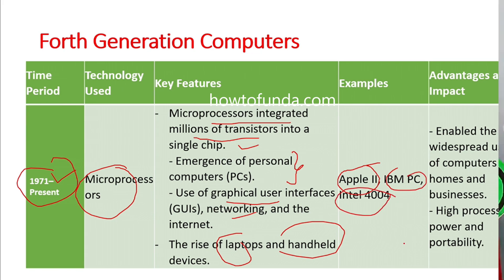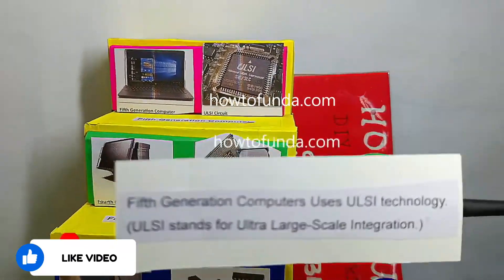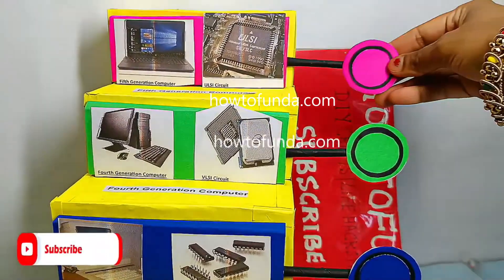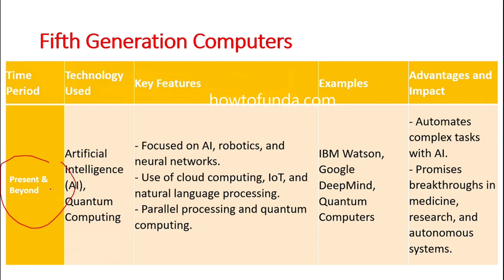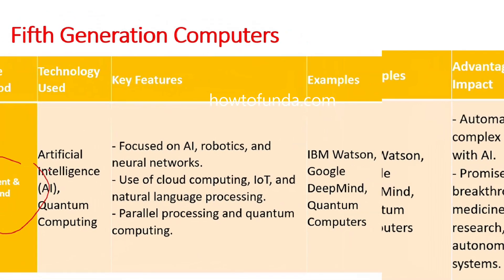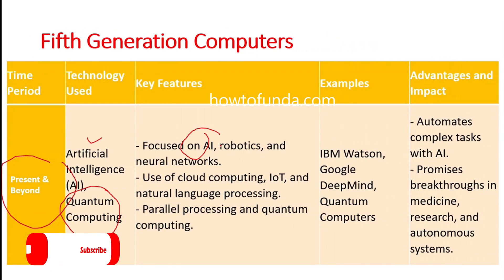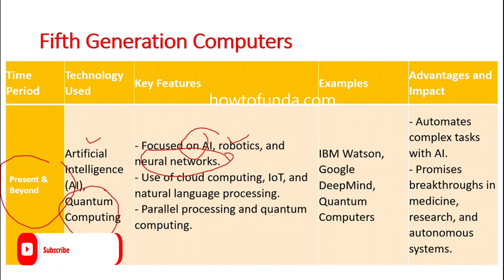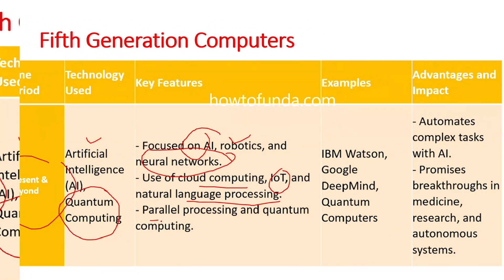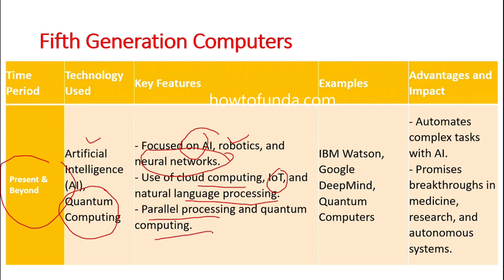The fifth generation computers are present-day and beyond. The technologies used are very robust, including artificial intelligence and quantum computing. The focus is on artificial intelligence, robotics, neural networks, cloud computing, IoT, and natural language processing. These technologies enable parallel processing and quantum computing. Some examples of fifth generation computers are IBM Watson, Google DeepMind, and quantum computers.